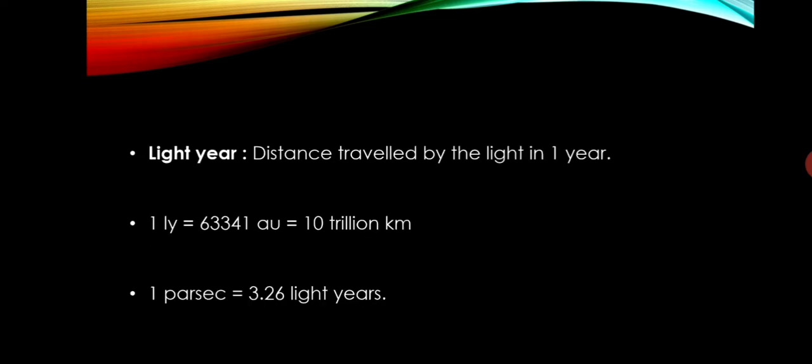The second unit used is light-year. One light-year is the distance traveled by light in one year, that is, around 63,000 astronomical units, or 10 trillion kilometers.